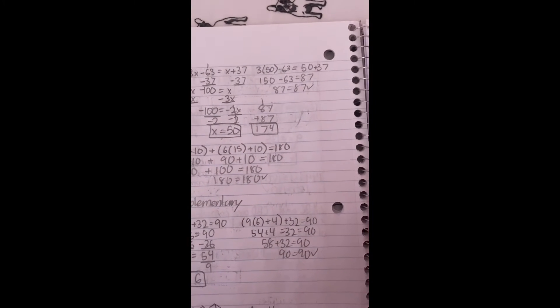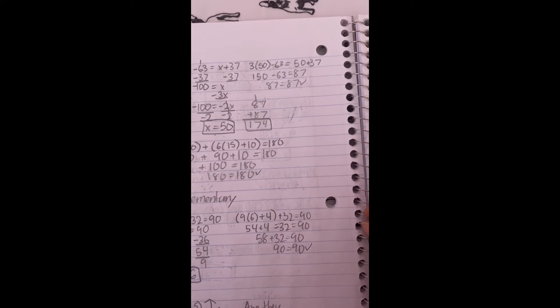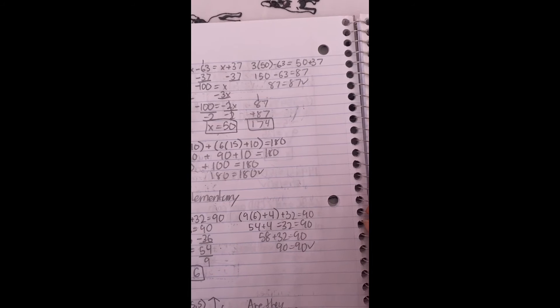I mean 3 multiplied by 50 equals 150 minus 63 is 87. 87 added together makes 174.